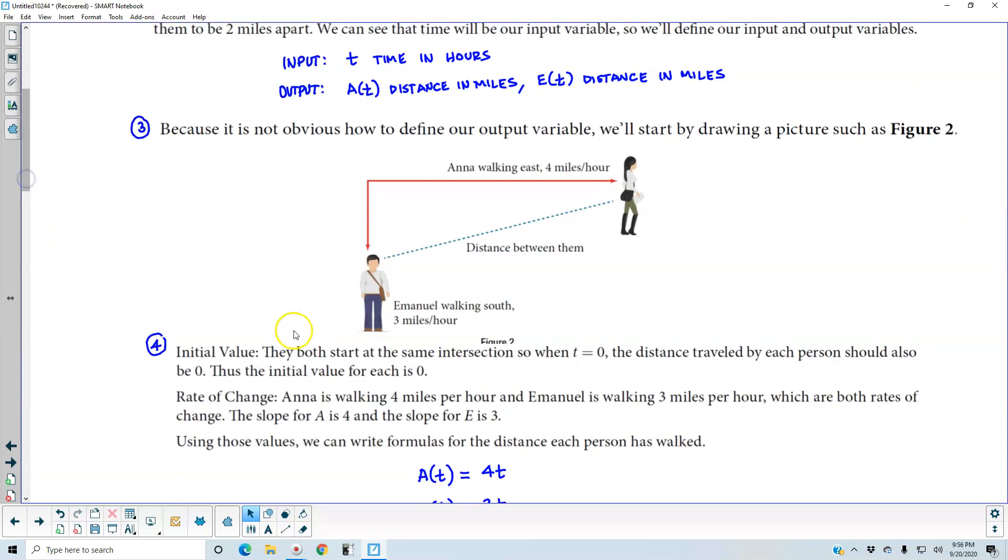Now, the initial value: they both start at the same intersection, which is here. So that means we're going to say that t is going to equal 0. So the distance traveled by each person should also be 0 at that particular point. Therefore, the initial value for each is going to be 0.